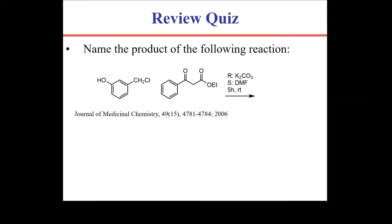Once we've enolized the beta-ketoester through deprotonation, then we will alkylate it with the alkyl halide. So in the last lecture, we discussed the EASD process. Enolization, alkylation, saponification, decarboxylation. This reaction doesn't show an acidic workup, so we're just going to go through the enolization and the alkylation.